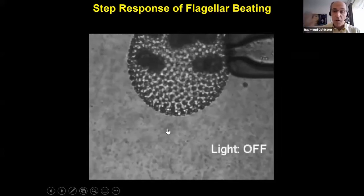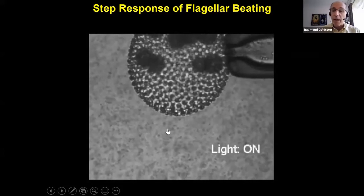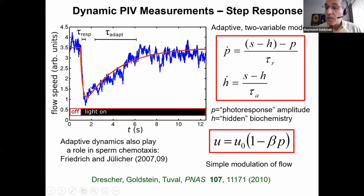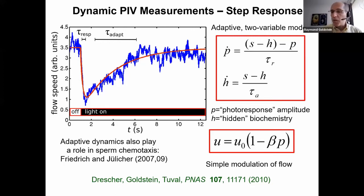Using particle image velocimetry to quantify fluid flow near the surface as the light switches on, we see a very rapid downregulation of flagellar beating—fluid flow drops on the scale of a fraction of a second—and then over several seconds it recovers to its original behavior. This is a standard adaptive response with two characteristic timescales: a response timescale and an adaptation timescale.